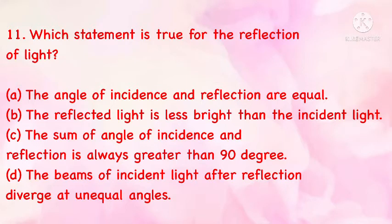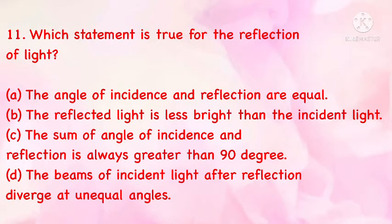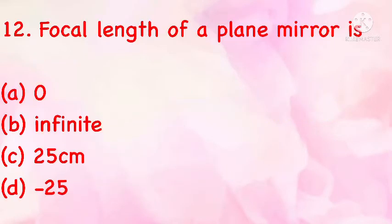Which statement is true for the reflection of light? (a) The angle of incidence and reflection are equal, (b) the reflected light is less bright than the incident light, (c) the sum of angle of incidence and reflection is always greater than 90°, (d) beams of incident light after reflection diverge at unequal angles. The correct answer is (a): the angle of incidence and reflection are equal.